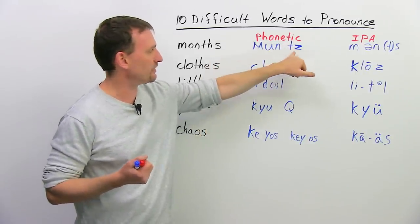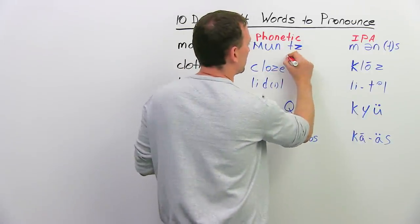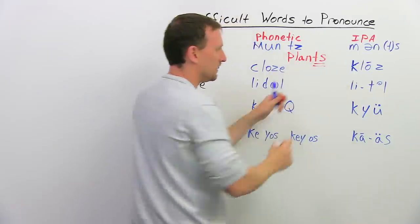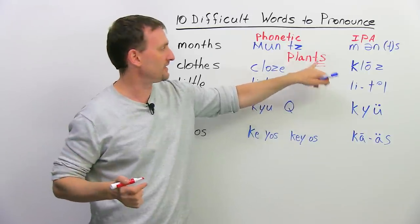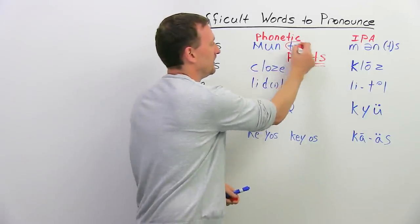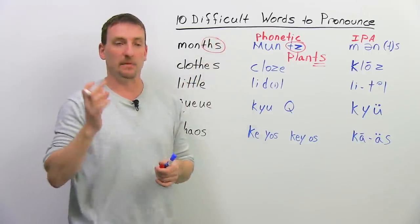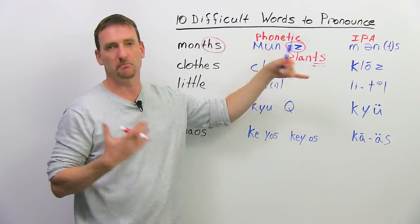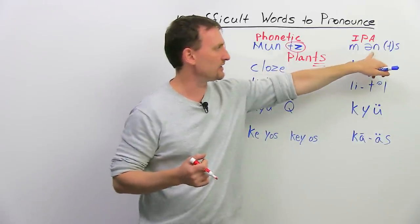The way it sounds like to us, the way I say it is months. The ths, I just switched to a tz. So, if you think about the word plants, everybody knows how to say plant, one plant, many plants. This is the same sound as here, tz. So, this is the same sound here. Mun, like sun, run. Mun, tz, months. Okay? Again, don't try to separate them.